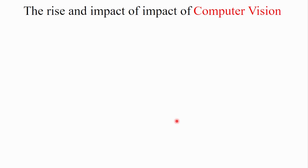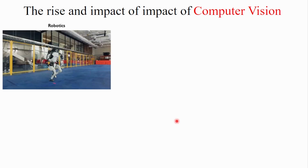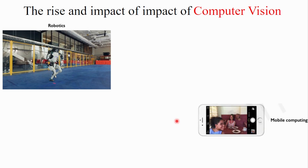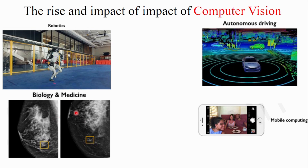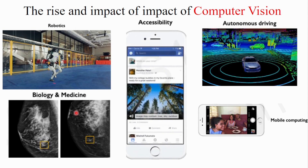Now let's look at the rise and impact of computer vision. It has a big impact across different areas. For example, in robotics, it allows robots to pick up on key visual cues in the environment, critically enabling them to navigate the world alongside humans. Similarly, on smartphones you can enhance, crop, and apply different applications. Deep learning computer vision also has very significant implications in biology and medicine, and is one of the hot fields also being applied for accessibility.